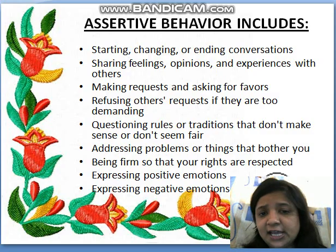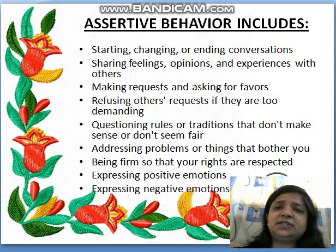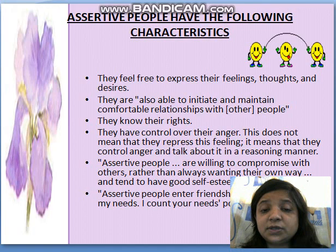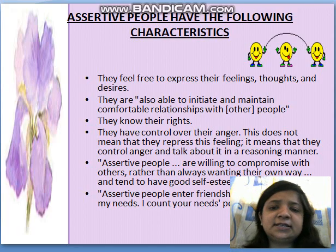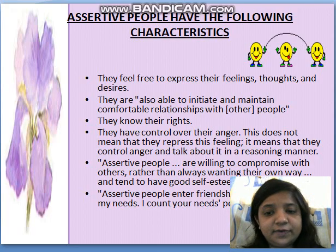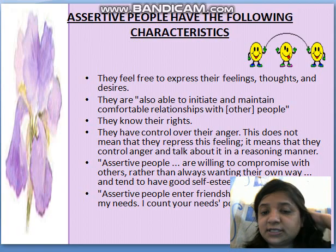Certain behaviors and rules fall under assertive communication: starting, changing, and ending conversations; sharing your feelings; making requests; refusing others' requests; questioning rules; and addressing problems; expressing positive and negative emotions. When people have assertive behavior, they feel free to express their feelings and desires, they are comfortable in relationships, they know their rights, have control over their anger, are willing to compromise, and have good self-esteem.